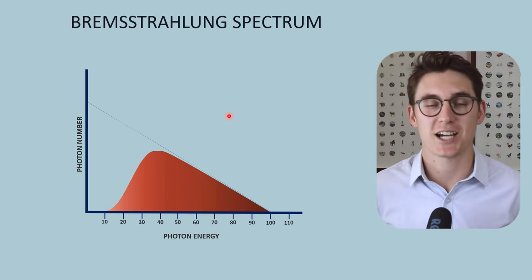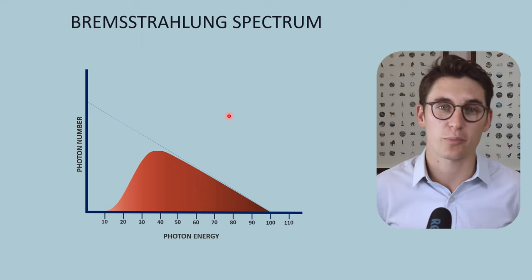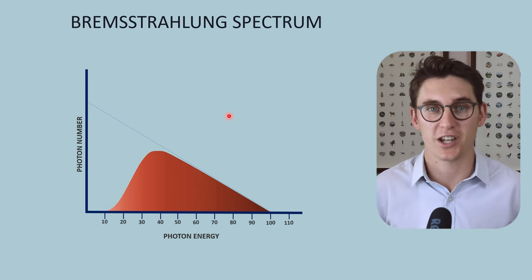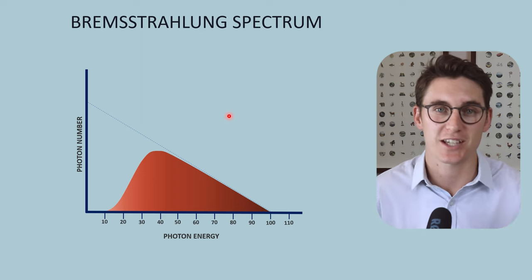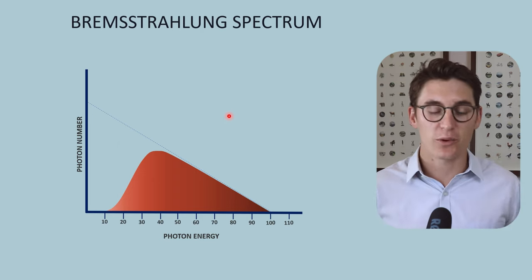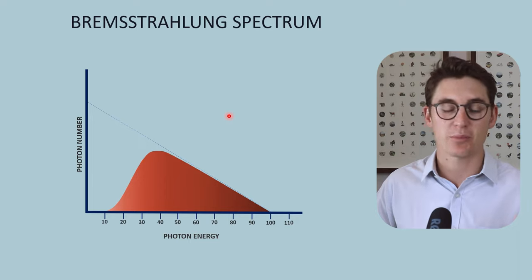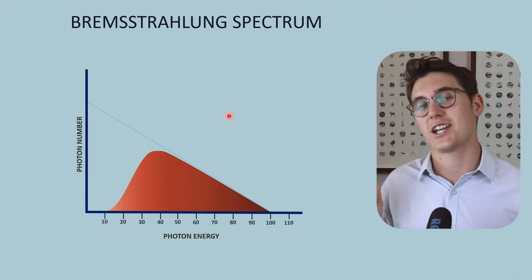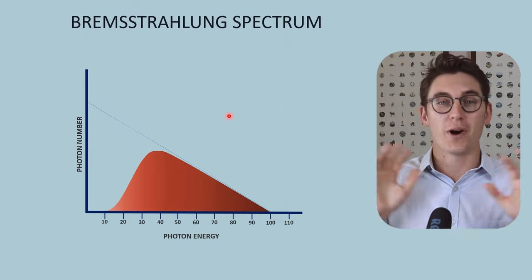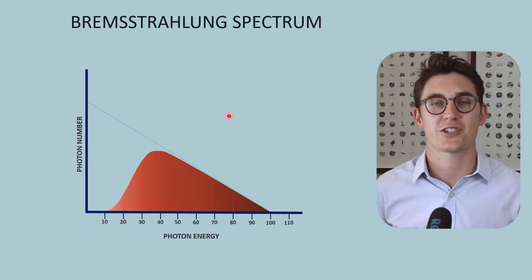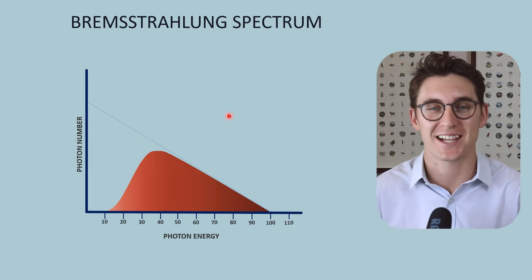If you want to practice these types of questions, check out the question bank linked in the top line of the description — I go through all the different ways in which these questions get asked in exams. Now that we've looked at the production of Bremsstrahlung radiation and the Bremsstrahlung spectrum, let's shift our attention to characteristic radiation, combine those two spectra, and get our x-ray spectrum proper. I'll see you in that talk.